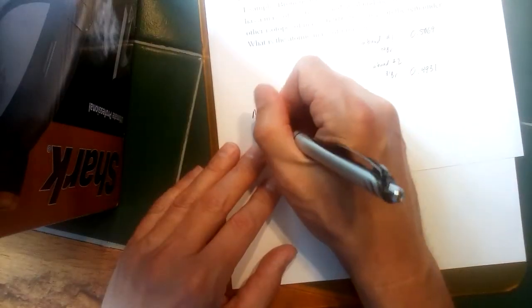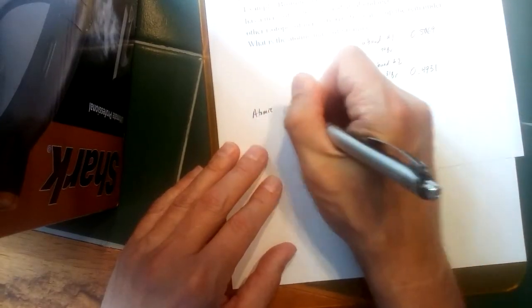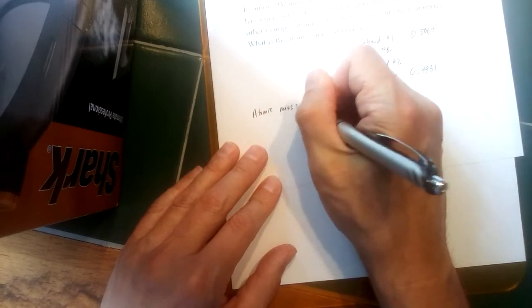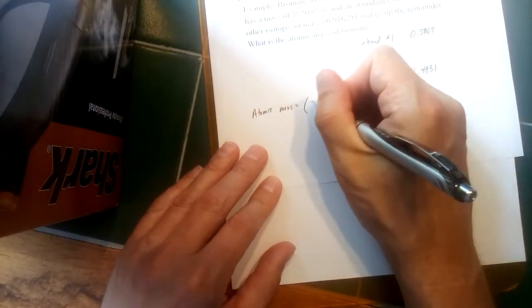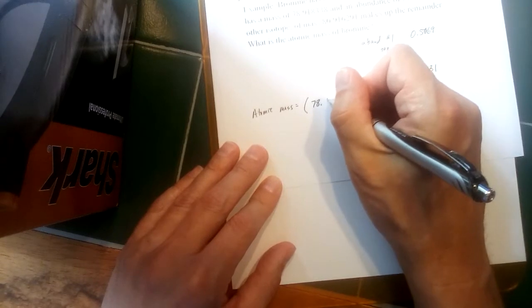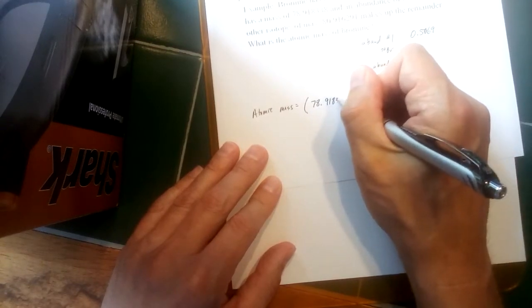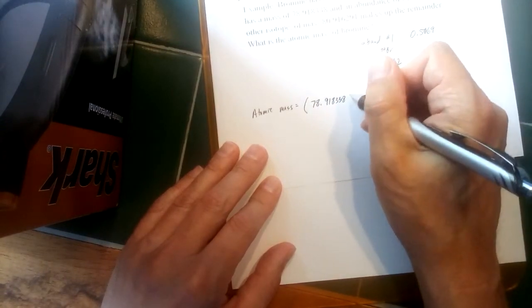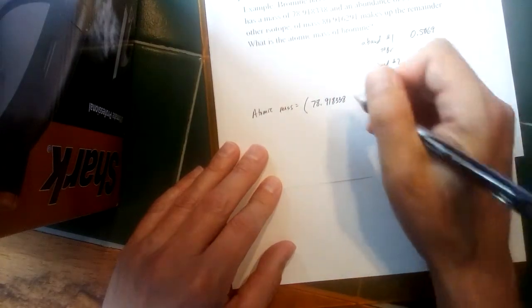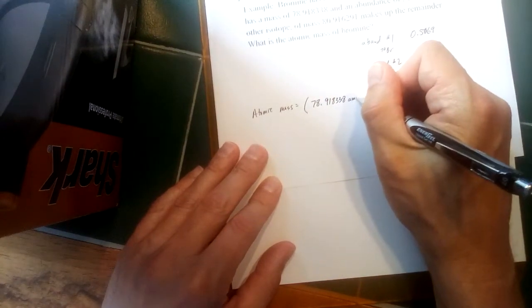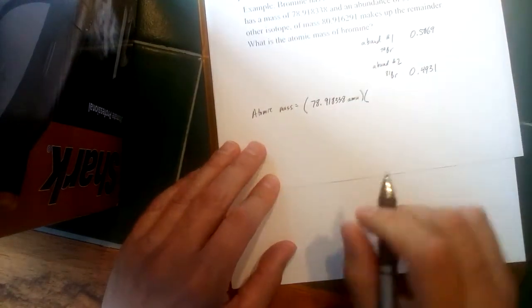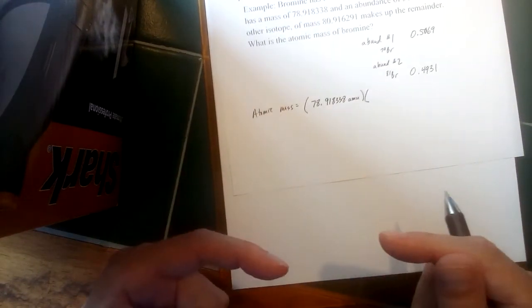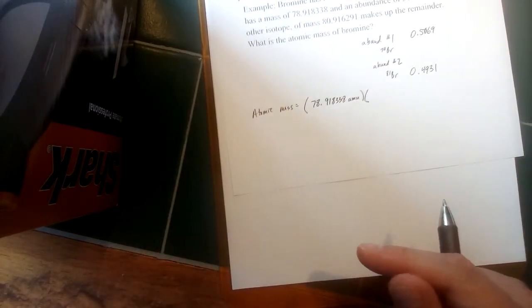Now just taking the numbers we've got, plugging into this equation, we would get something like this: atomic mass here for bromine, we would take the mass of the first isotope, and we're going to use all of these significant figures here. Now the way we measure mass of atoms is in a unit called an atomic mass unit.